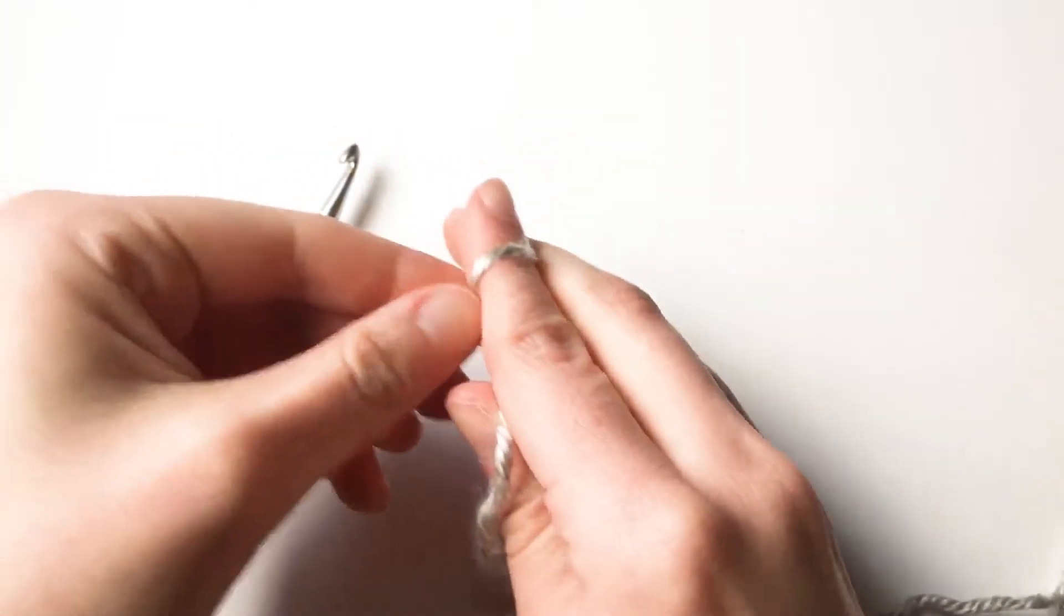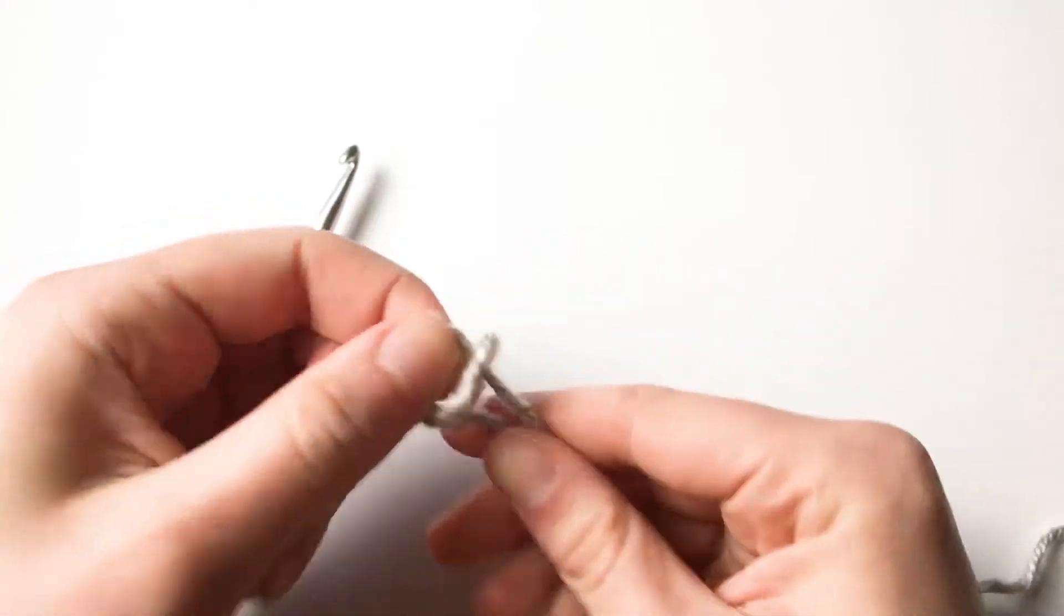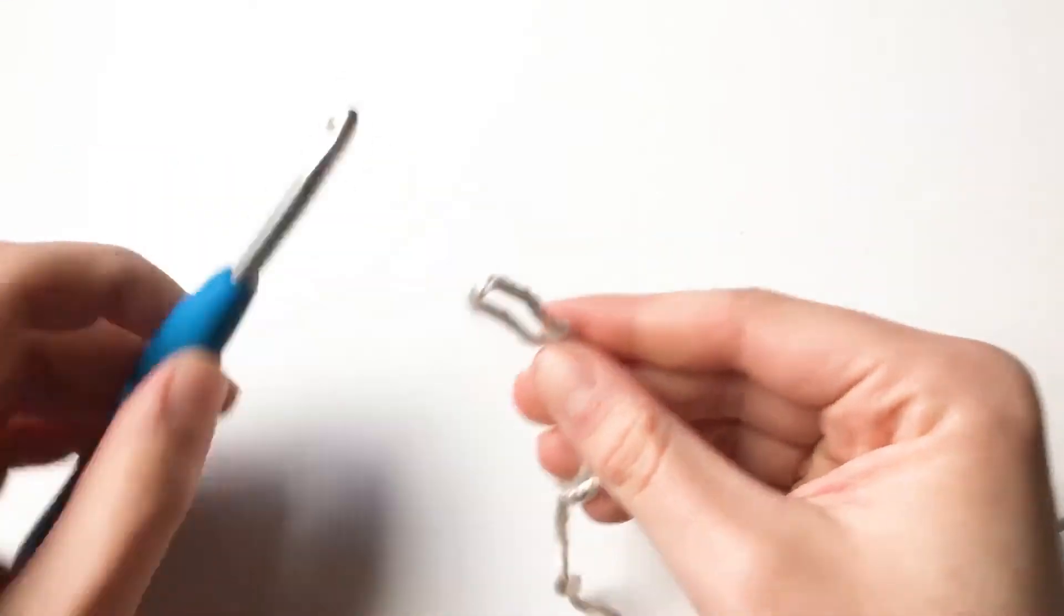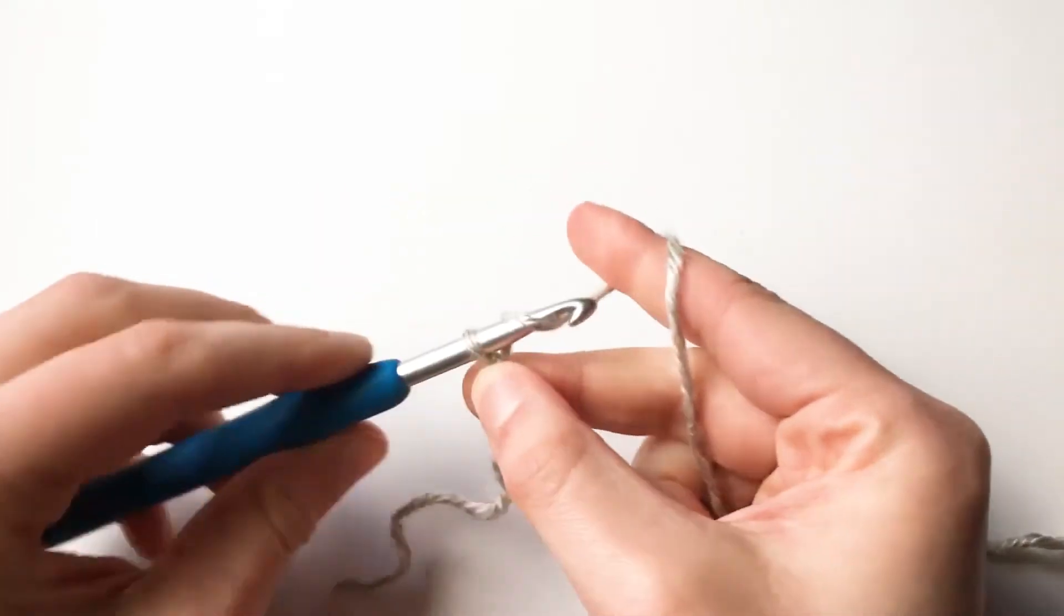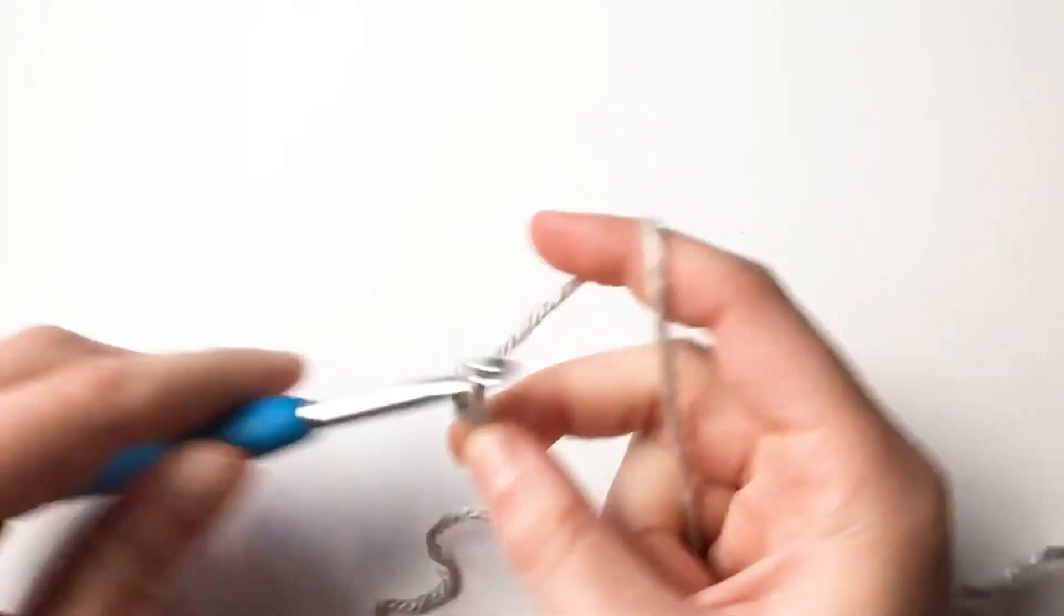To start the herringbone half double crochet, make a slip knot and insert your hook, and then chain your desired length. For this stitch pattern, it does not matter the number of chains.